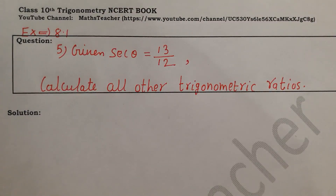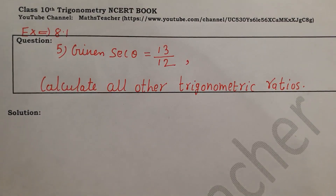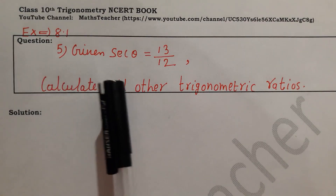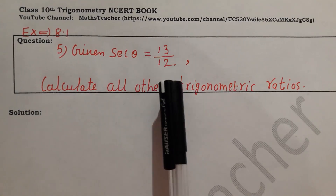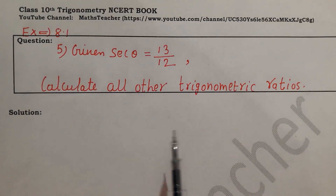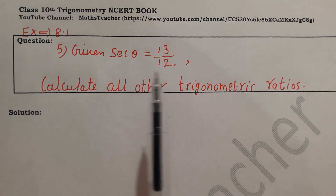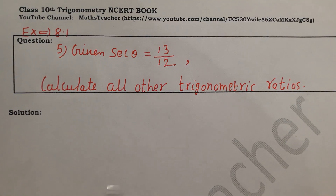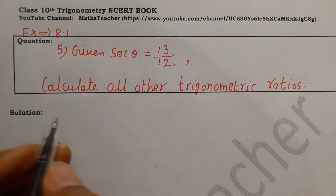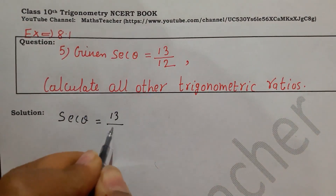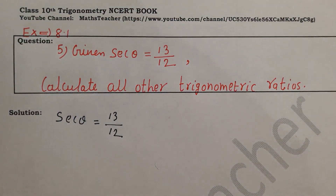Hello viewers, welcome. I am Rashmi, your maths teacher, today with another question of trigonometry from Exercise 8.1, Question Number 5. Given: sec theta is 13 by 12, calculate all other trigonometric ratios. All other means the total 6 ratios — sine, cos, cosec, cot. We have the value of sec, so we need to find the remaining 5 trigonometric ratios.